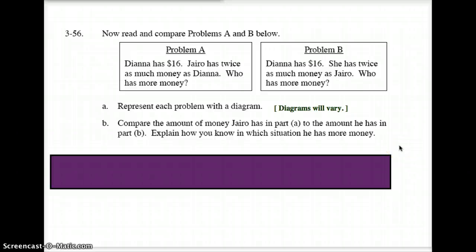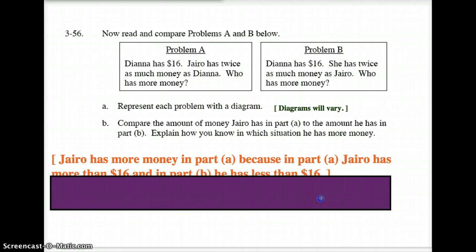Let's take two more examples here. Problem 56: Deanna has $16. Jairo has twice as much money as Deanna. Think about that. Who's got more money, Deanna or Jairo? If Jairo has twice as much, Jairo has more money. Problem B: Deanna has $16. She has, meaning Deanna has, twice as much money as Jairo. Well, who has more money there? Deanna does because she's got twice as much. Hopefully that makes total sense to you.